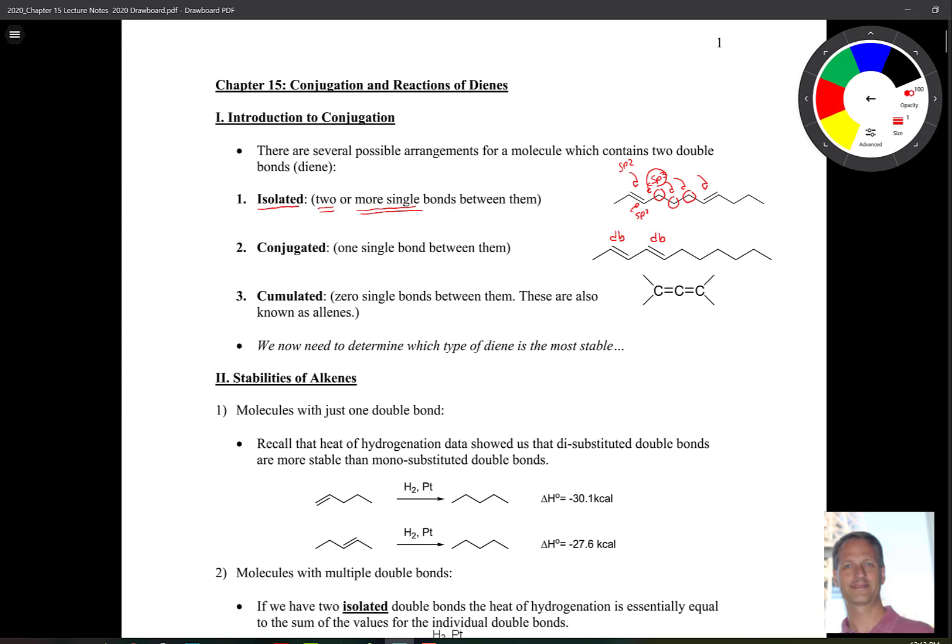And then there's one other arrangement, and that is called cumulated. So cumulated double bonds are double bonds that are connected to each other, kind of like in the molecule CO2. So reviewing some first semester OCIM, hybridization of this is sp2, that is also sp2, and then this carbon right in the middle is sp hybridized. Now of the three, we want to determine which type of diene arrangement is the most stable.